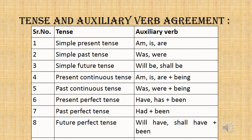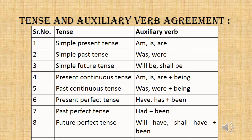While changing active to passive voice, we should look at the tense and auxiliary verb agreement. Simple present tense: use am/is/are. Simple past tense: use was/were. Simple future tense: use shall be. Present continuous tense: use am/is/are + being. Past continuous tense: use was/were + being. Present perfect tense: use have/has + being. Past perfect tense: use had + being. Future perfect tense: use will have/shall have + being. Modal auxiliary: use modal auxiliary + be.